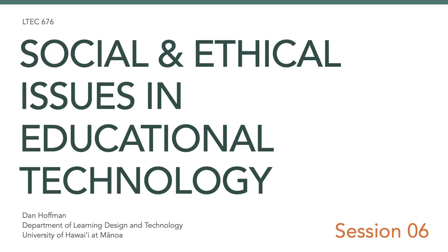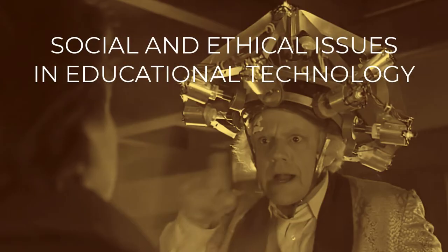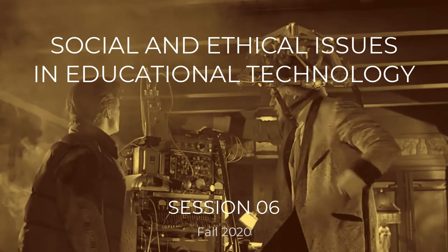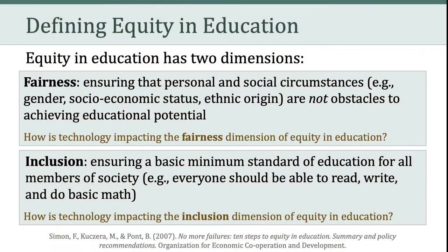Hello everyone. Welcome to session six of LTCH 676. Last week we left off talking about the two dimensions of equity in education: fairness and inclusion. And we contemplated how technology is impacting both of those dimensions. So I want you to keep that in mind as we move forward to talk about some of the points raised in the Darling Hammond 2007 article.